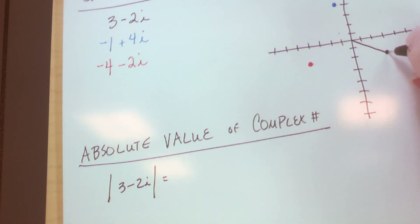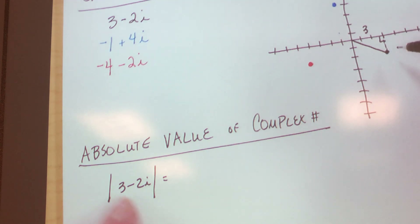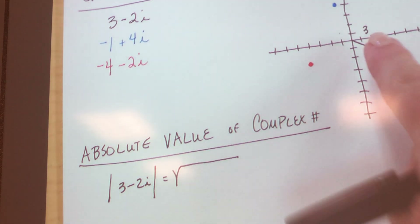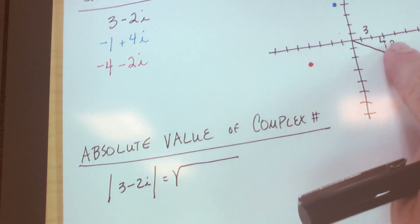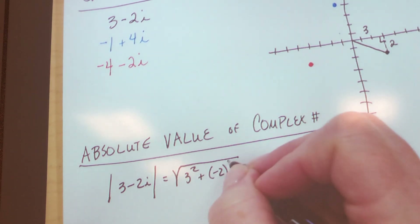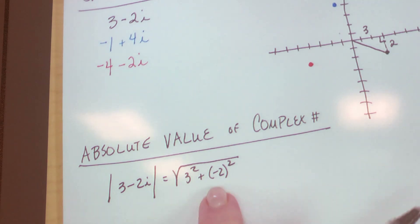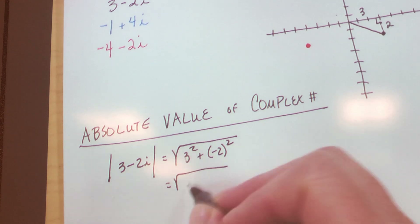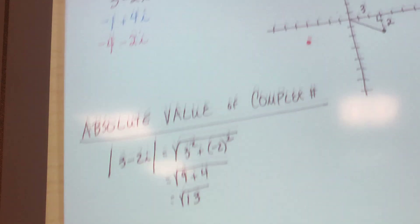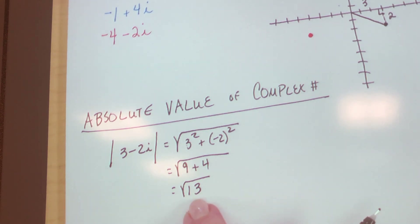Watch what I'm fixing to do. What's the length of this side? 3. What's the length of this side? 2. Do you know how to find that hypotenuse? He's the square root — by the Pythagorean theorem: 3 squared plus (negative 2) squared equals c squared. So it's the square root of 9 plus 4. What's 9 and 4? 13. The square root of 13. Is there a perfect square that divides into 13 evenly? No — it's a prime number, so this is simplified.